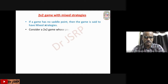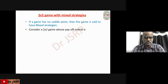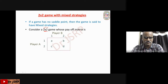Consider a 2x2 game whose payoff matrix is as follows. A 2x2 game means player A has two strategies and player B also has only two strategies. This is the payoff matrix.